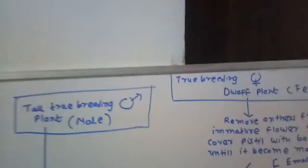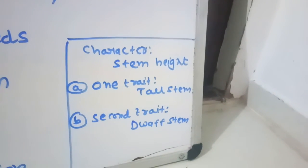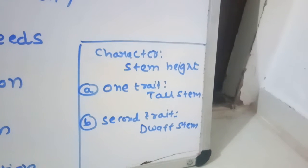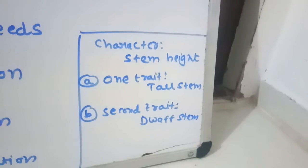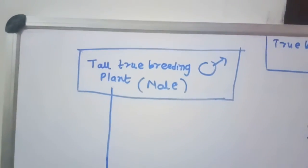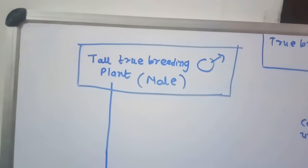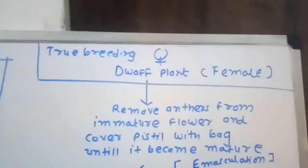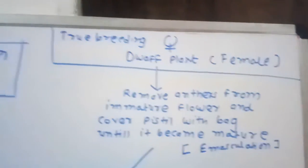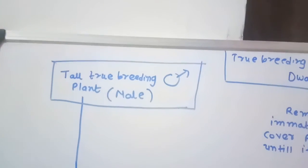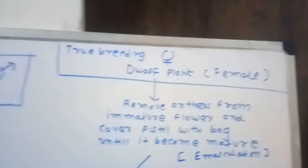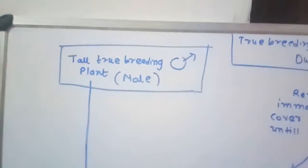Let's understand how Mendel performed a monohybrid hybridization experiment. The example here is the inheritance of the character stem height. In stem height, there are two opposing traits: tall type and dwarf type. Mendel first took two different true breeding pea lines — one true breeding tall plant and one true breeding dwarf plant — and crossed these two plants to initiate the monohybrid experiment.